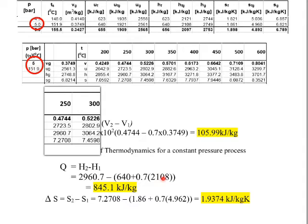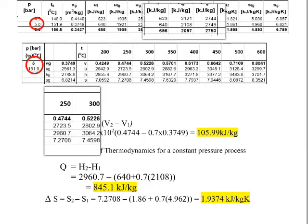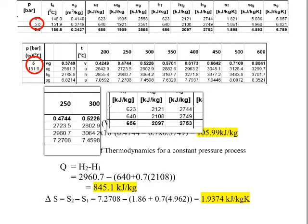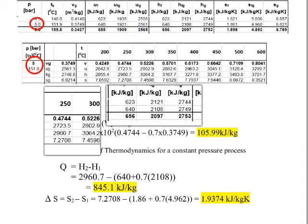Let's extract it. You can see we have 640 for HF and 2108 for HFG. We include them with the dryness fraction and we get our heat transfer, kilojoules per kilogram.